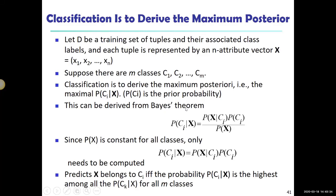From Bayes' theorem, we know that the posterior probability equals this expression. Because for a fixed dataset, the probability of every X occurring is fixed, so we can ignore P(X). Our goal is just to find the greatest value for a class — we're comparing which class has the greatest posterior probability for the observation. We can estimate P(C_i) as the number of observations belonging to class i divided by the total number of observations.